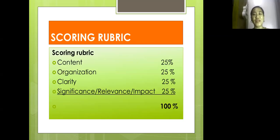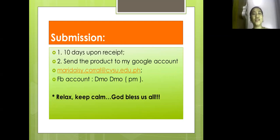I still have the same scoring rubric. Content is 25%, organization is 25%, clarity is 25%, significance or impact is 25%. That makes 100% for all those assignment activities and projects. If you have questions, please feel free to ask me or text me on messenger. Submission would be 10 days upon receipt and send product to my Google account, mariadesy.corral@csu.edu.ph.